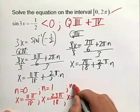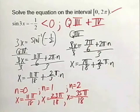Part of the reason that we don't go any further than this is if we plug in n equals 3, that will move our solution outside of our interval.